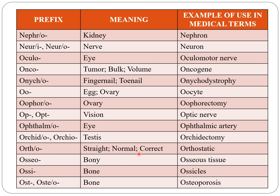Orth indicates straight, normal, or correct, for example orthostatic. Osseo or osse indicates bone — osseous tissue, ossicles. Osteo or oste also indicates bone, for example osteoporosis.